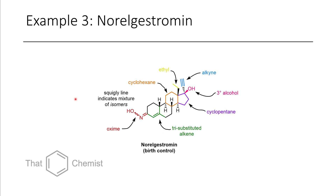Here is another example: norelgestromin, which is birth control. There are a number of different functional groups worth highlighting. When we have a C double bond N with an OH sticking off of it, that's called an oxime. The squiggly line here means this product is a mixture of the OH pointing one way and the other way. We can also see a double bond with three substituents — a trisubstituted olefin or trisubstituted alkene. We also have a cyclohexane ring, a cyclopentane ring, an ethyl group, an alkene sticking off of a tertiary alcohol.